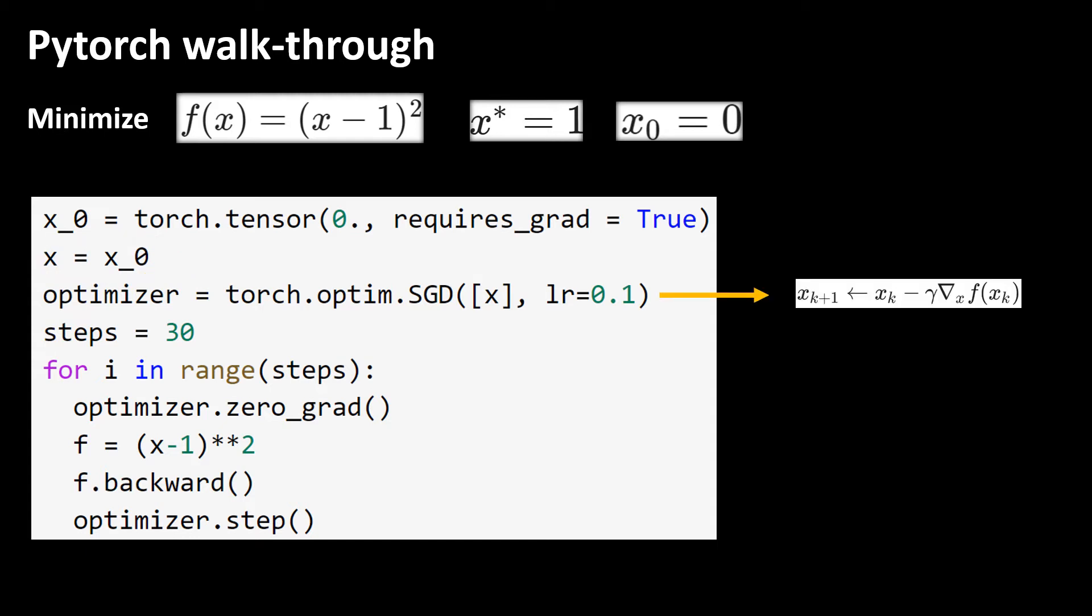In this line we are defining our algorithm. As you can see here mathematically we are defining a gradient descent algorithm. x inside square brackets means the optimization variable is x.